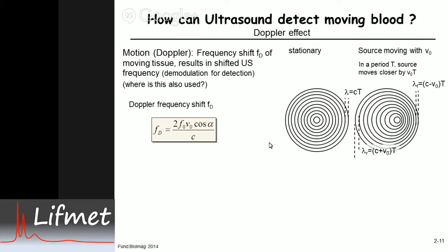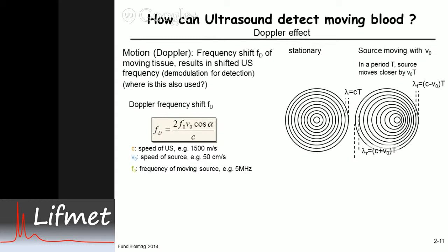The empirical Doppler shift formula is: the frequency shift equals two times the frequency times the velocity of the object times the cosine of the angle — which is the angle of the observer relative to the motion — divided by the wave propagation velocity. In tissue, the speed of sound is about 1.5 kilometers per second. Blood in an artery moves at about 50 centimeters per second. Here we don't have a moving source directly, but a reflection off a moving object, which is equivalent to the source moving.